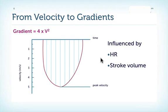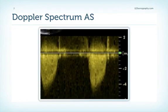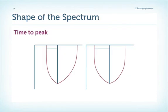If you have low output of the heart, we will find low velocity and also low gradients. This is a typical example of the Doppler spectrum in aortic stenosis, showing a velocity above 4 meters per second indicating severe aortic stenosis. The shape of the spectrum and time to peak also points to severity — a later peak velocity or longer time to peak in systole indicates severe aortic stenosis.